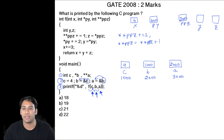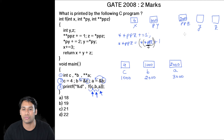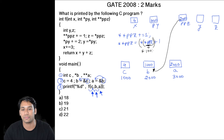Looking at this statement, we are using two stars. The value stored in ppz is 2000. Because of the first star, we go to location 2000 and take the value 1000. So after the first star, we get 1000, and the statement becomes *(1000). Then, going to location 1000, we take the value stored there, which is 4. So the right-hand side evaluates to 4 + 1.